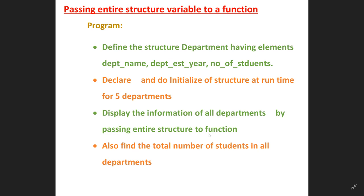Also find the total number of students in all departments within that function. That means we have to design a function with the prototype: function with argument but no return type. So design that function 'display' and pass the entire array of structure. First, we will handle a single department, then modify for five departments.